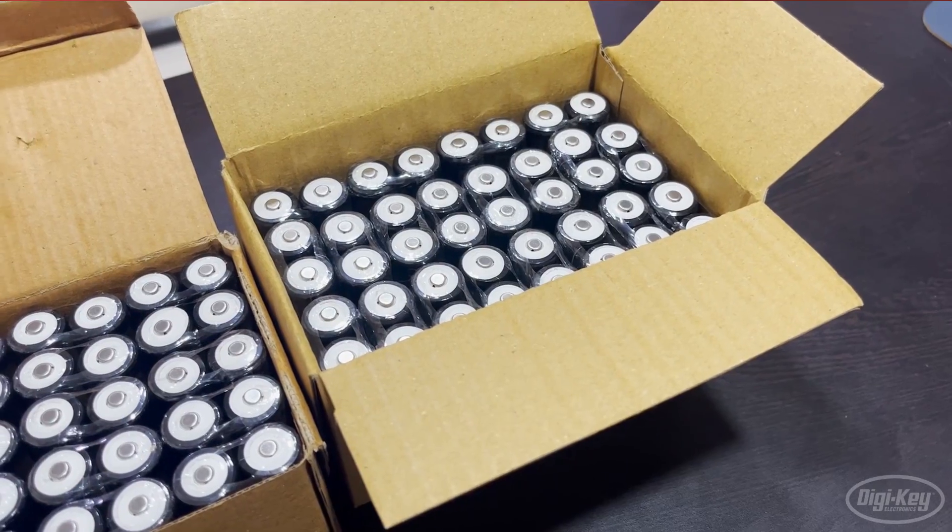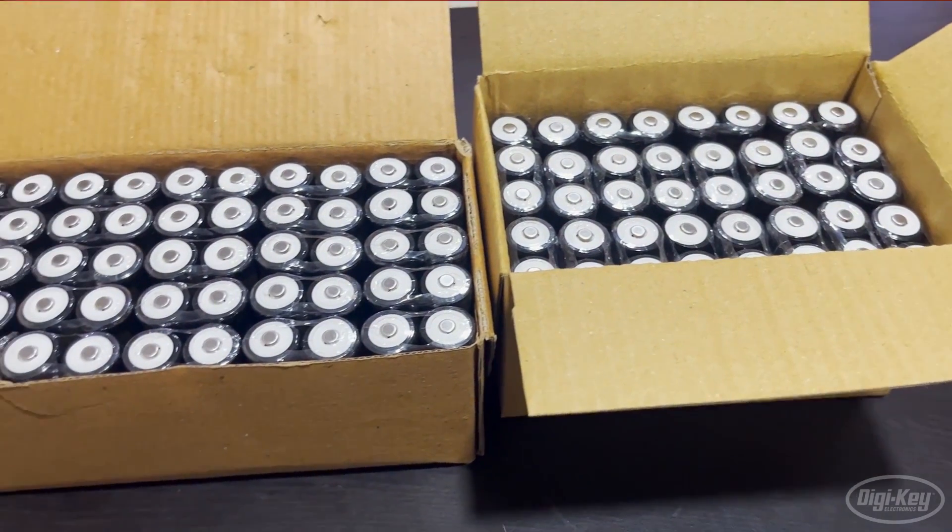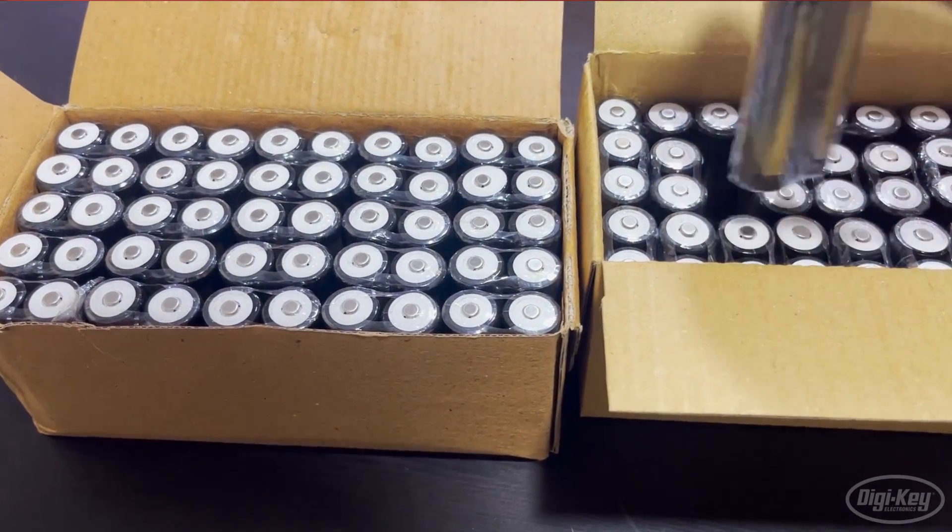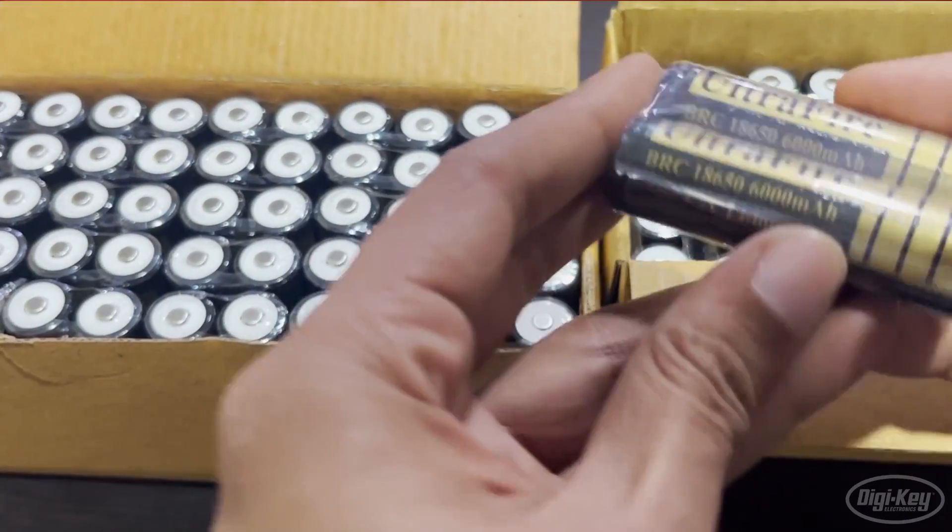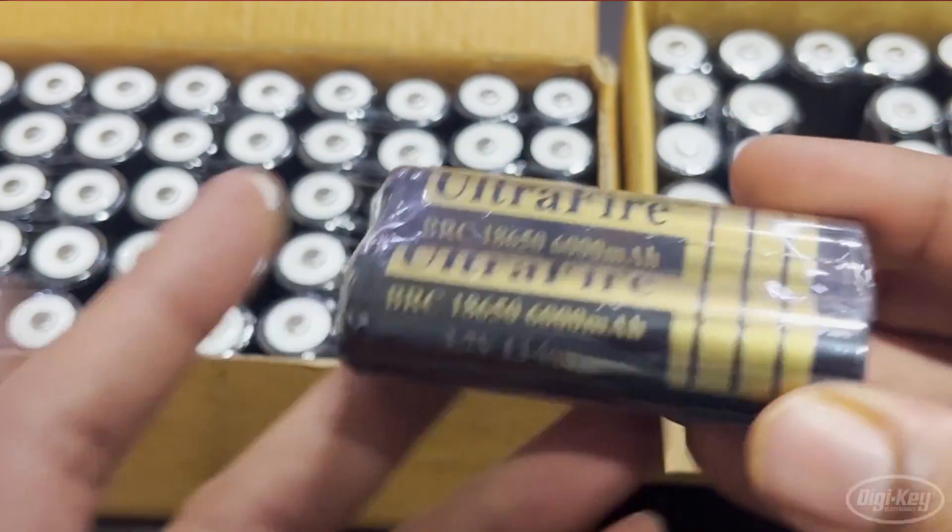But why do you need one? Because you can't always trust the capacity values mentioned on these cells. Take a look at this - this box of 18650 cells claims to have a capacity of 6000 mAh per cell, which is complete BS. Apart from finding these fake cells, you will also need a capacity tester when you're building bigger battery packs.